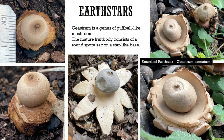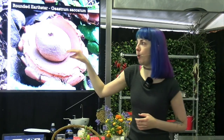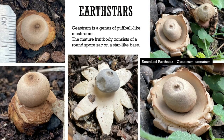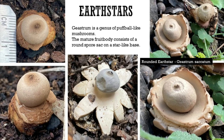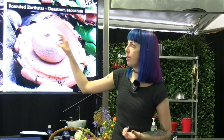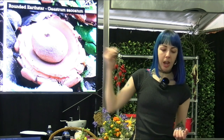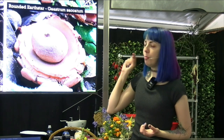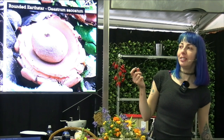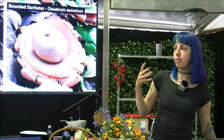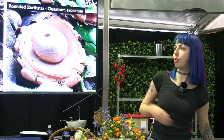Earth stars are part of the puffball family. They start out underground with an outer casing that emerges from the ground, opens up to form a star shape, and then the spores are produced inside a sac. The spores are pushed out of the little cup when someone pokes it or rain falls on them. They keep producing spores, so each time you poke it, it will produce more.